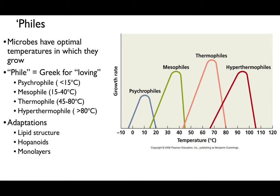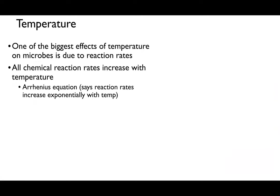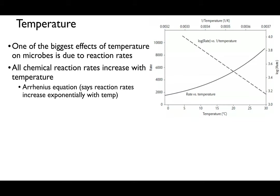As a general rule, most organisms have a bell-shaped growth curve — they have one temperature at which they grow really well (the optimum), and they still grow at other temperatures but not quite as fast. There are a number of adaptations that allow growth at different temperatures, including adaptations to lipid structure, the introduction of hopanoids into membranes, and the formation of monolayers. Temperature is a big deal not just for structures but also for reaction rates.